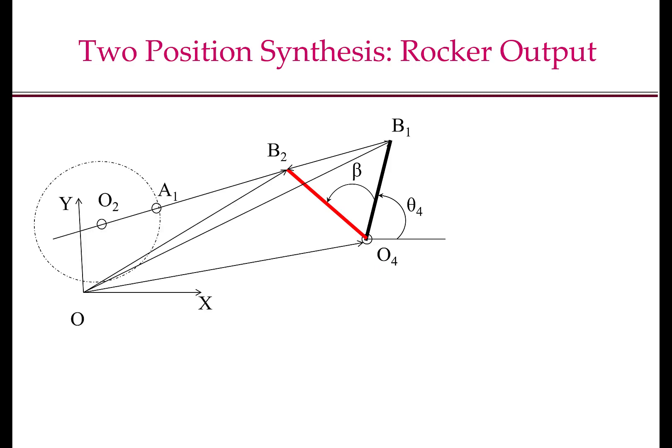We know that one of the fixed pivots will lie on the line joining B1, B2. So this is what the picture shows. Note that this picture is very similar to the graphical construction picture that we have seen before. However, in this case, we are not constructing the picture graphically. This is just a sketch. We have it here so that we can define all the variables.